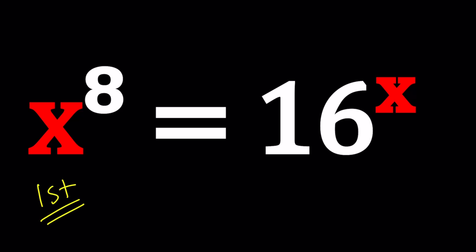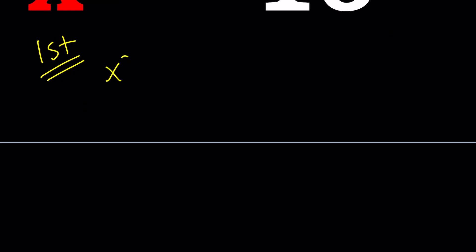So for my first method, since we have something like x to the 8 equals 16 to the power x, I noticed that one of the bases is a power of 2 and 8 is an even number, so that might be a little clue for me to pick x as a power of 2. So I'm going to substitute x equals 2 to the power n on both sides of this equation and see where that takes us.